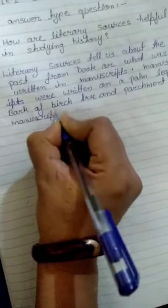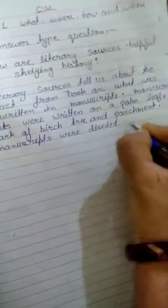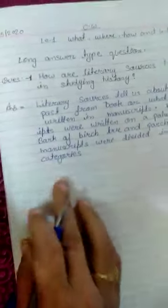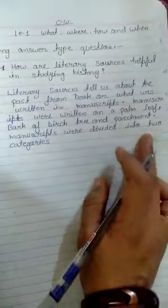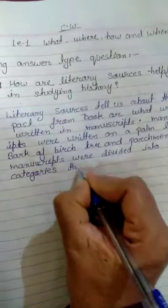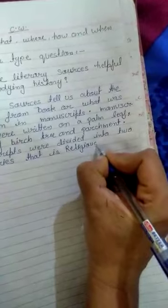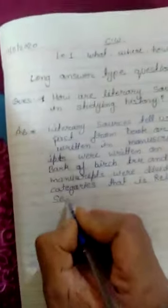Manuscripts were divided into two categories: secular and religious.